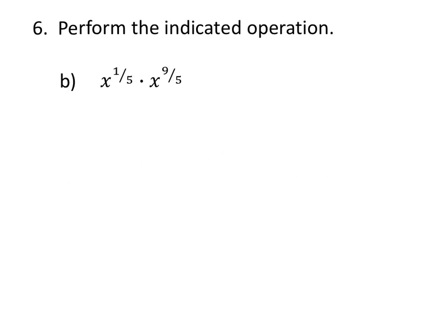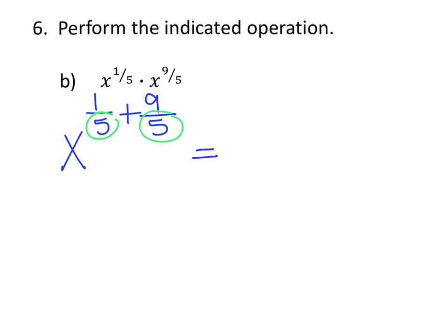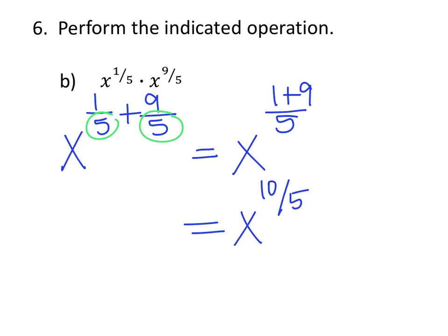When multiplying two expressions with the same base, we add the exponents. So we're going to have x raised to the 1/5 plus 9/5. When we add exponents we want to make sure that we have common denominators, which in this case we do — the denominators are 5. So now all we have to do is keep the denominator the same and add the top. The final answer is x to the 10 over 5, and 10 divided by 5 is 2, so the answer is x to the second power.